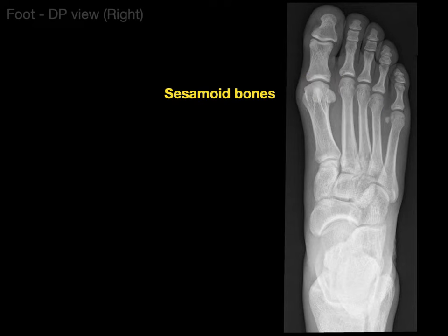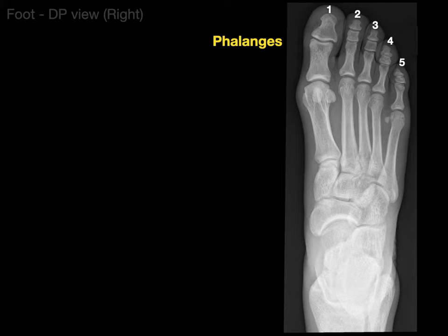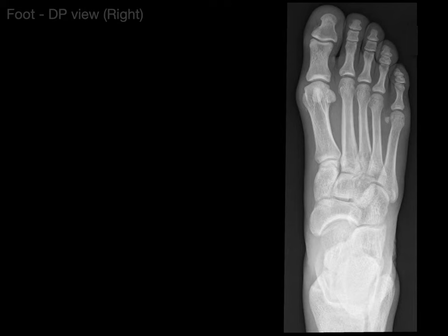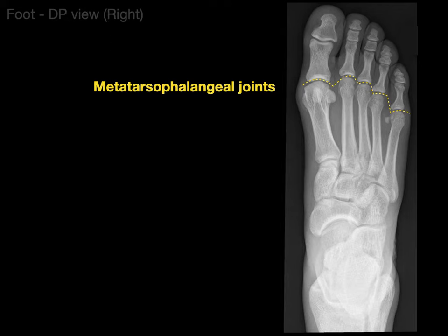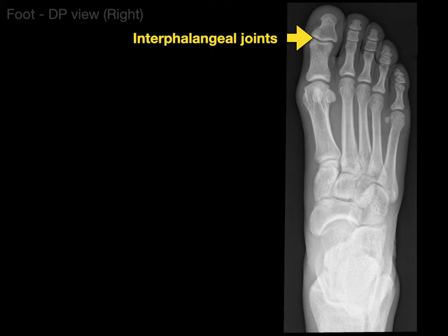We can see a few sesamoid bones in this x-ray. Next, we have our phalanges — these are your toes. There's digit 1, 2, 3, 4, and 5. Digit 1 is your great toe and digit 5 is your little toe. The great toe has a proximal and a distal phalange, while all the lesser toes have a proximal, middle, and distal phalange. The joints between the metatarsals and the proximal phalanges are the metatarsophalangeal joints. The great toe has an interphalangeal joint, and the lesser toes have a proximal and distal interphalangeal joint.